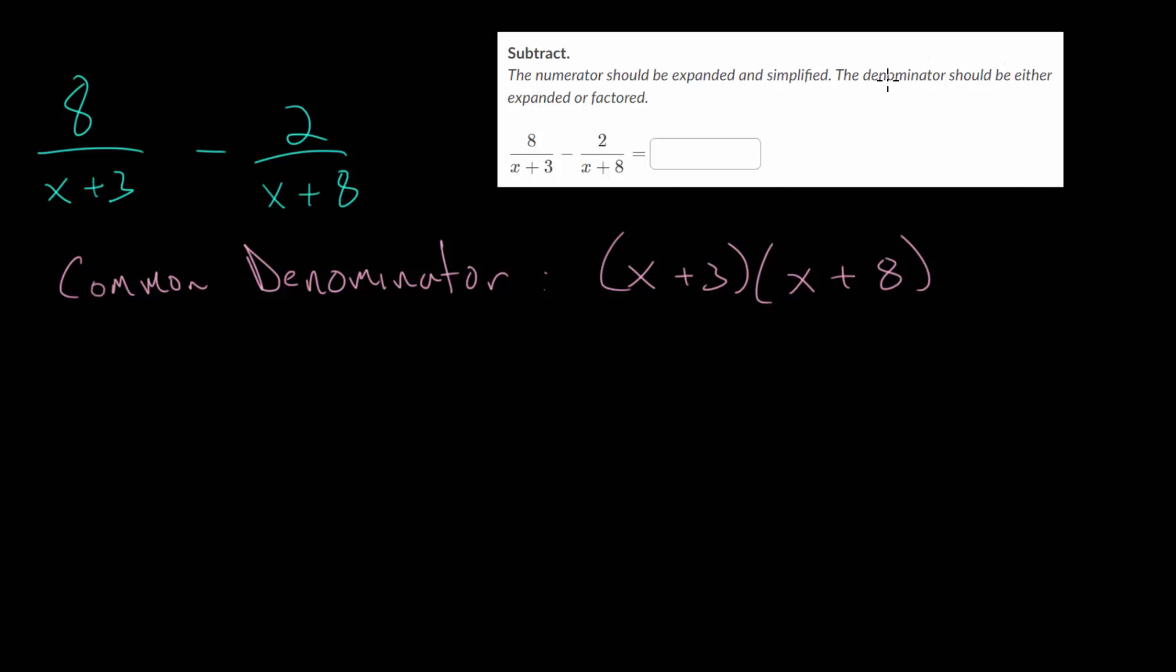And for these problems, you can either expand or leave it factored, this denominator. So I'm just going to leave it factored for now. And so we're going to take our first expression, this 8 over x plus 3. And to get that common denominator, we're going to need to multiply the top and the bottom by x plus 8.